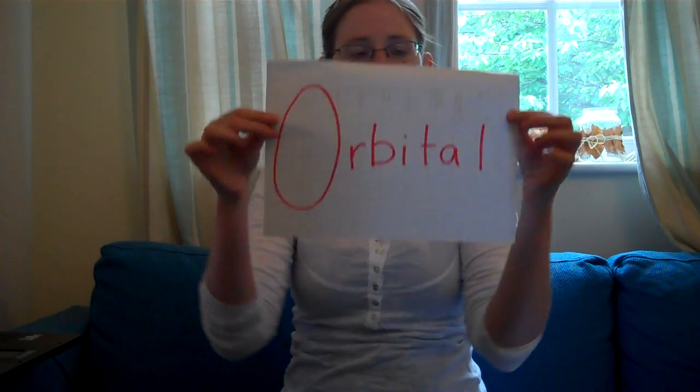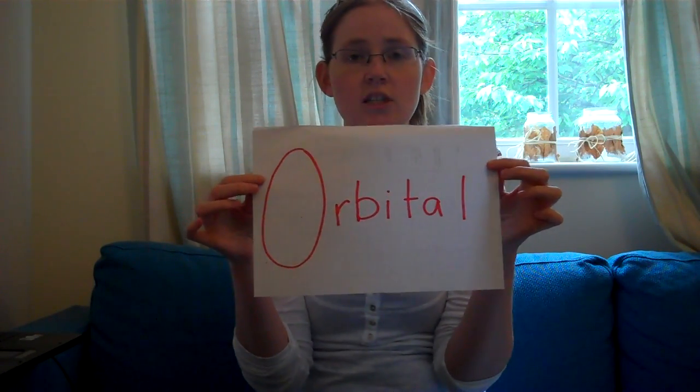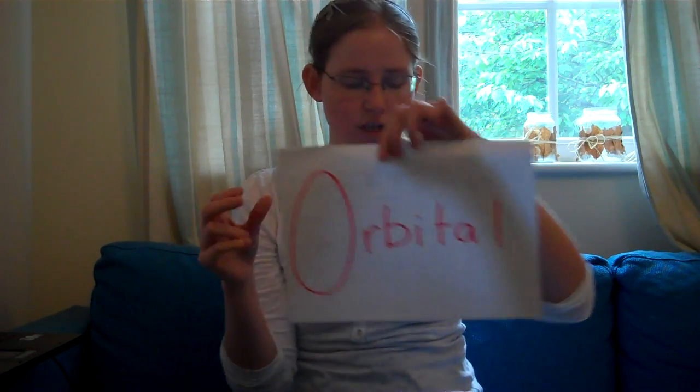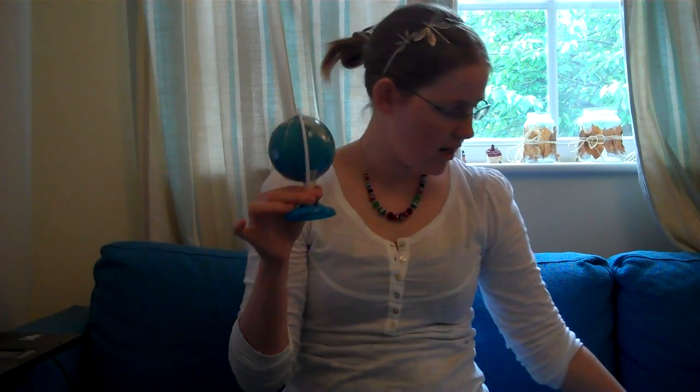Theory number three is Orbital Theory, which is to do with the orbit of the Earth around the Sun. As we know, the Earth orbits around the Sun. However, sometimes this orbit is circular and sometimes it's more oval-shaped. If you have a circular orbit, the Earth's climate stays fairly mild and the seasons don't change too much.